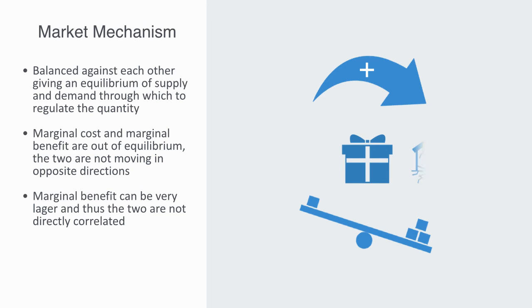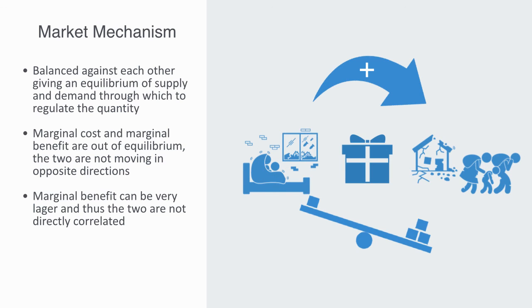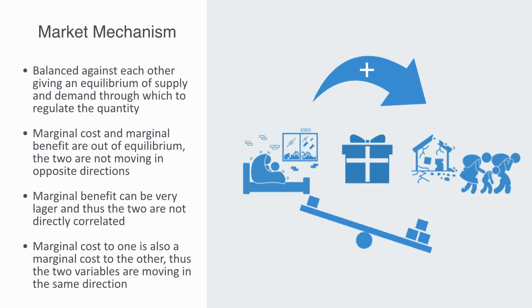Civil war is another example of a positive link. We have interference in the system, as the two components are in conflict. The marginal cost to one of waging war, is also a marginal cost to the other. Thus the two variables are moving in the same direction. There is no balance, thus it cannot be regulated through the market mechanism.